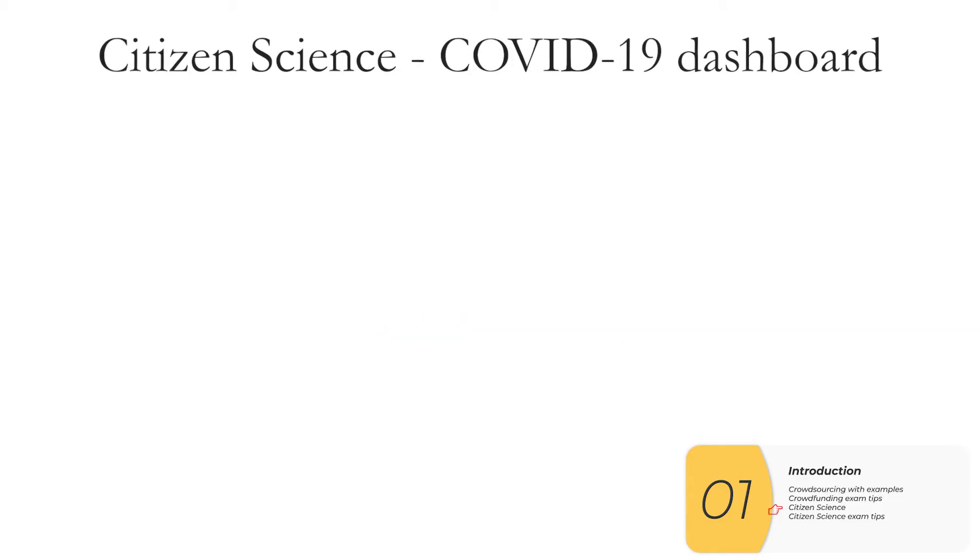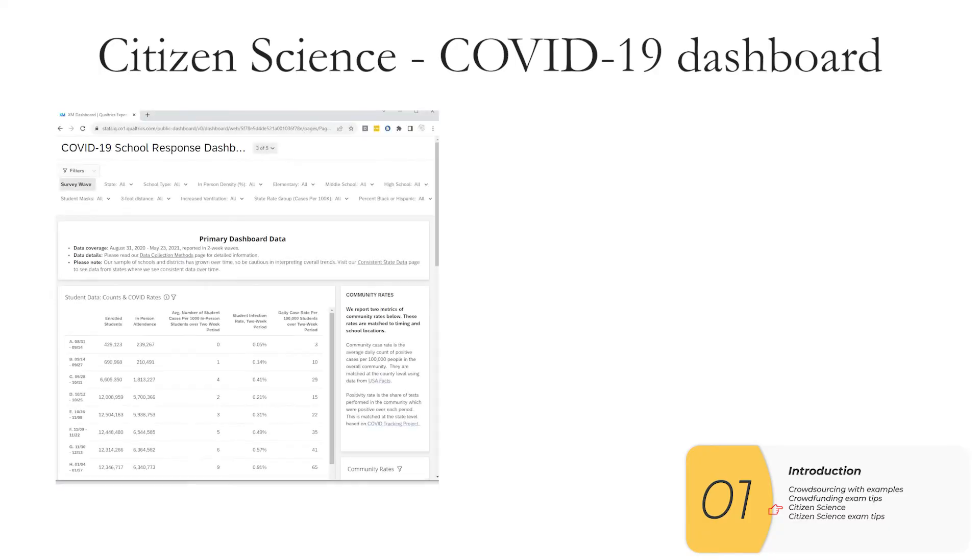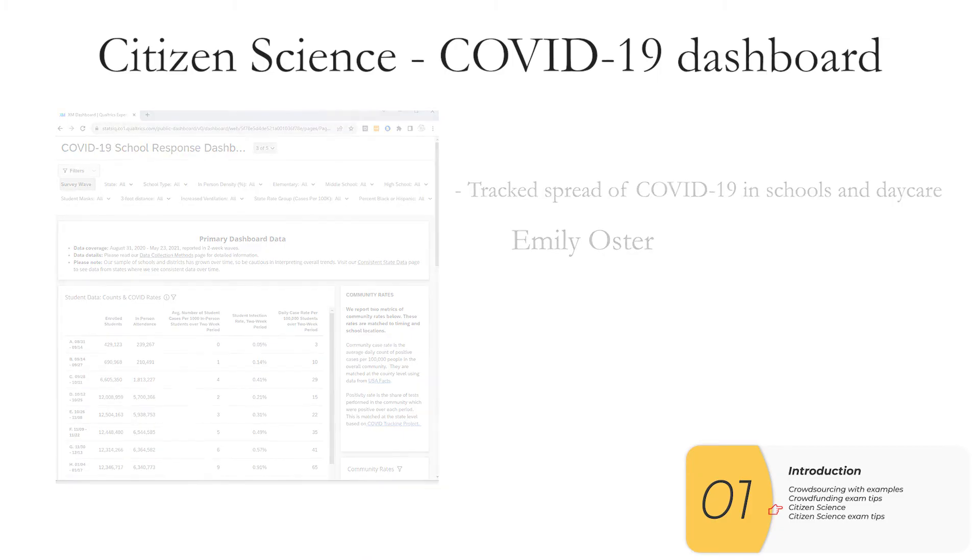Here are some examples of citizen science. This is a COVID-19 school response dashboard, where the spread of COVID-19 in schools was tracked using crowdsourced data. This was a project of Emily Oster. I think interestingly enough, this project found that COVID-19 was not really being spread in schools, but nevertheless, schools were closed for a long, long, long time.